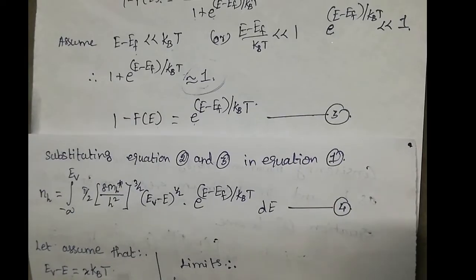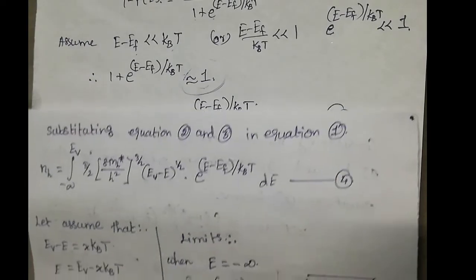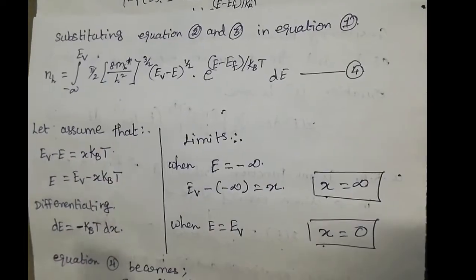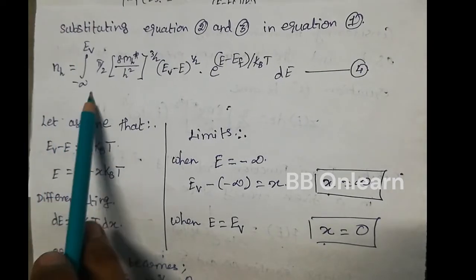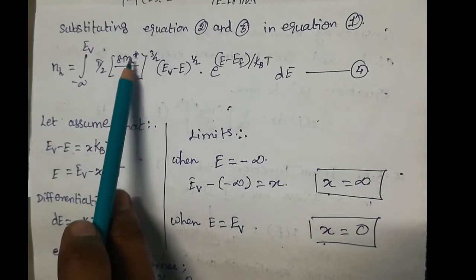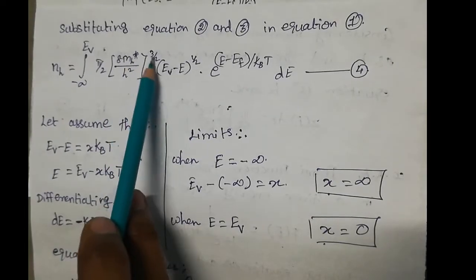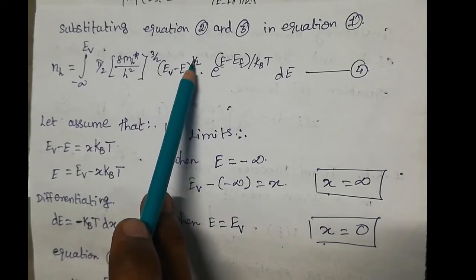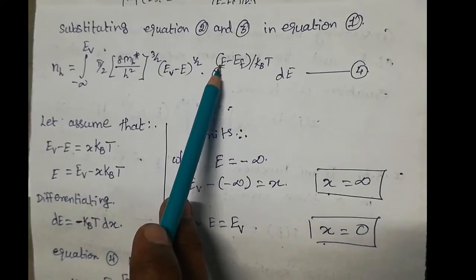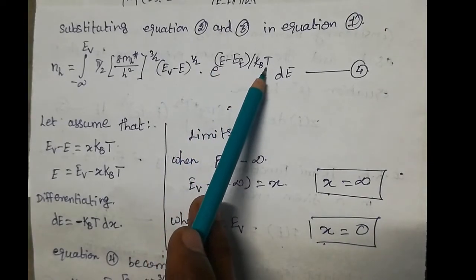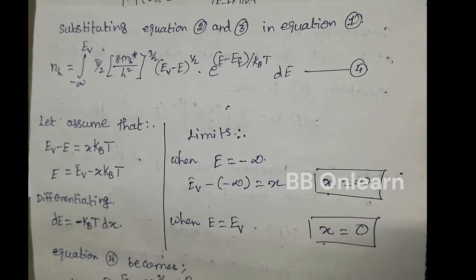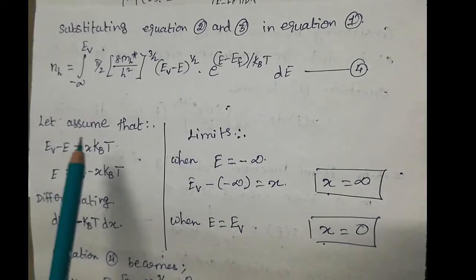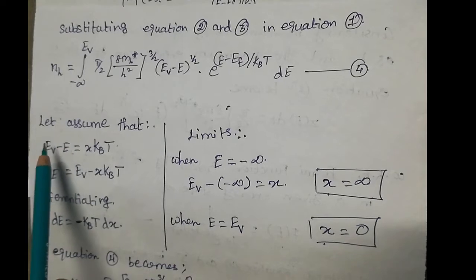Now substituting equation 2 and equation 3 into equation 1, we get: nH = ∫(−∞ to Ev) (π/2)(8mh*/ℏ²)^(3/2) × (Ev − e)^(1/2) × e^((e−ef)/kBT) de. This is equation 4.